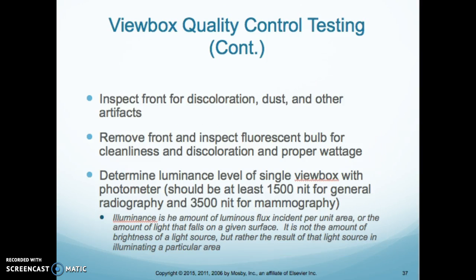When we do our inspections, we look for any kind of discoloration or dust or any other artifacts on the plate — the white plate that would be housing the film. Another thing we do is remove that front plate, and we look at the bulbs, and we make sure that they're clean and they're not discolored, and that they're the proper wattage. We'll determine the luminance level of a single view box with the photometer, and it should be at least 1500 nit or candela for general radiography and 3500 for mammography.